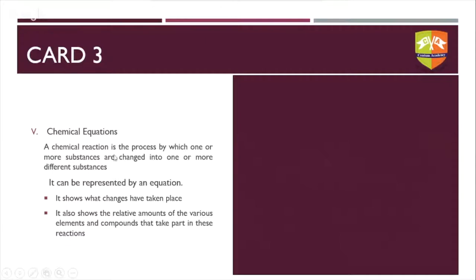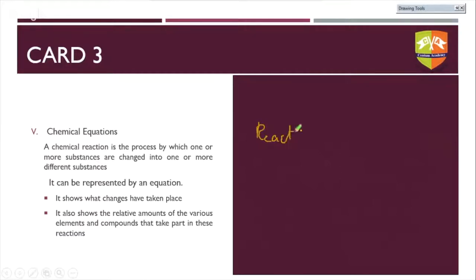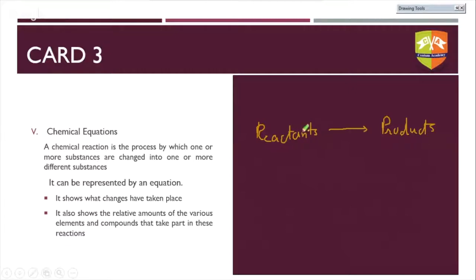Whenever a chemical process happens, one or more substances are changed into one or more different substances. By convention, reactants are written on the left-hand side and products on the right-hand side. The process of writing reactants with an arrow to products is what we call a chemical equation. This equation shows what changes have taken place — what substances were originally present and what new substance formed.